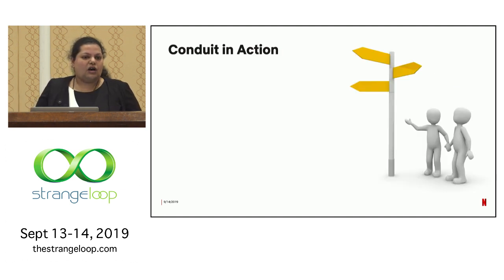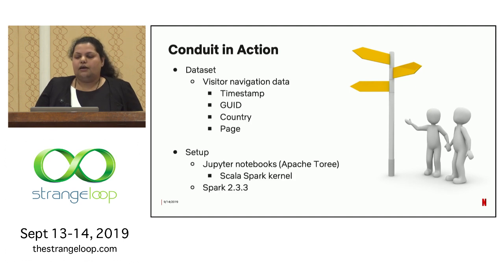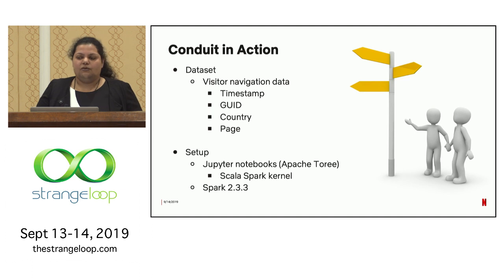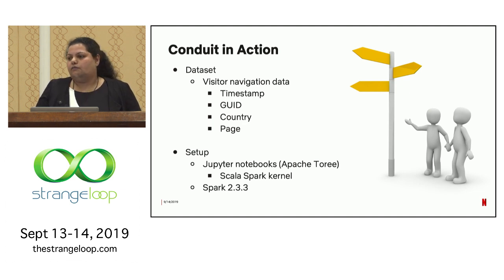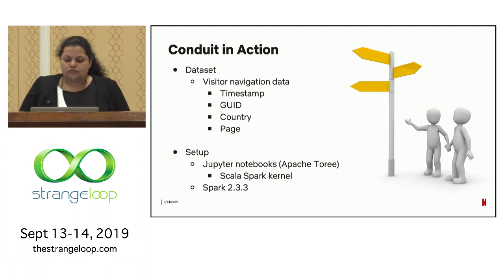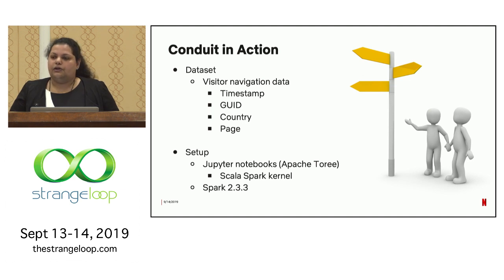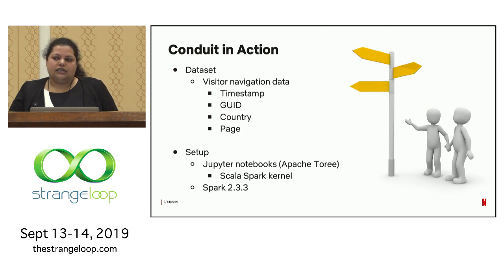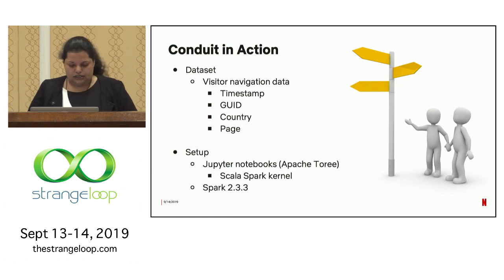Let me show a quick demo of how Conduit works. I'll use a simple dataset for visitor navigation with four pieces of information: a timestamp, a GUID that uniquely identifies users, the country from where the visitor saw a particular page, and the actual page itself. For running the demo, we're using Jupyter Notebooks set up with Apache Toree, using a Scala Spark kernel running Spark 2.3 in the background.